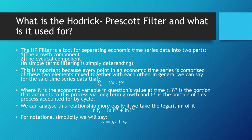So what is the Hodrick-Prescott filter and what is it used for? The HP filter is a tool for separating economic time series data into two parts: the growth component and cyclical component. In simple terms, filtering is meant to be detrending. This is important because every point in an economic time series is comprised of these two elements mixed together with each other.